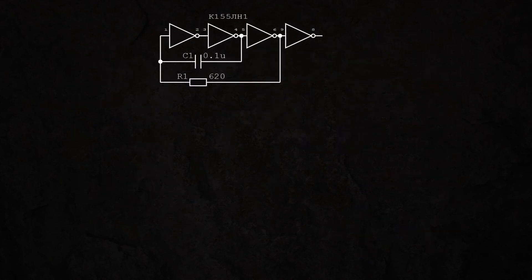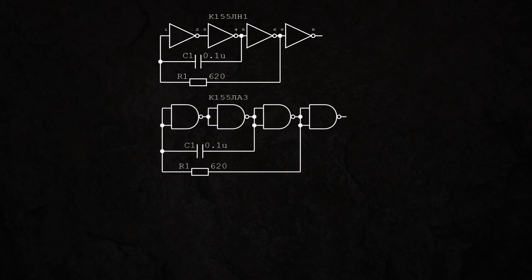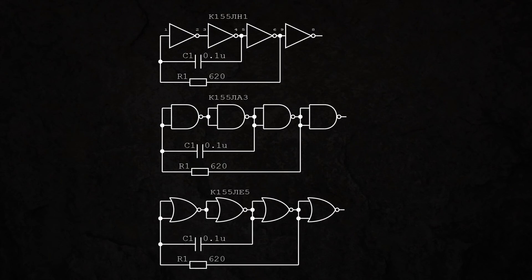First, the clock generator. It can be built using any basic logic elements with inversion at the output, meaning simply inverters on the K155LN1 chip, and not, K155LA3, or not, K155LE5. Well, you got the idea.